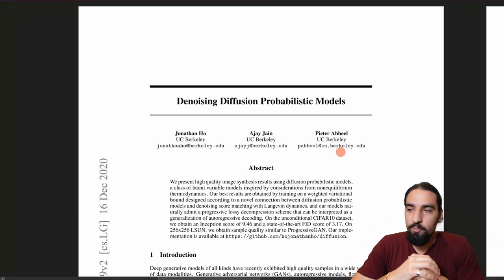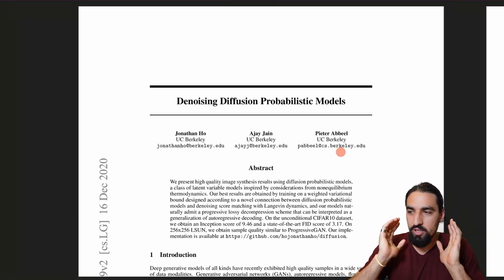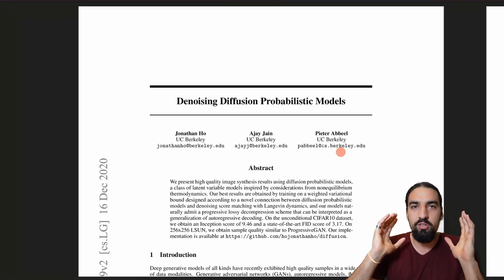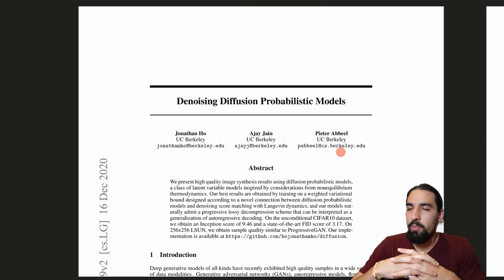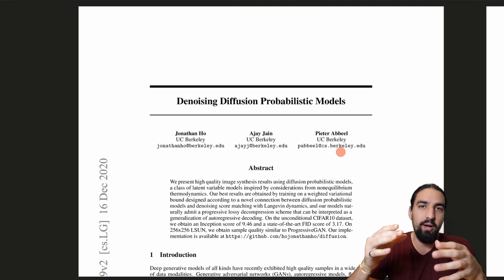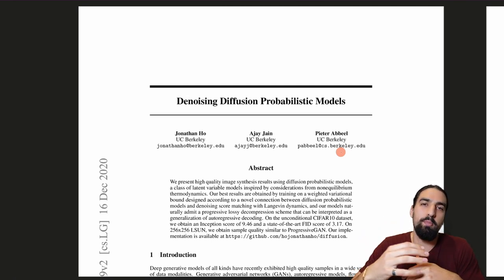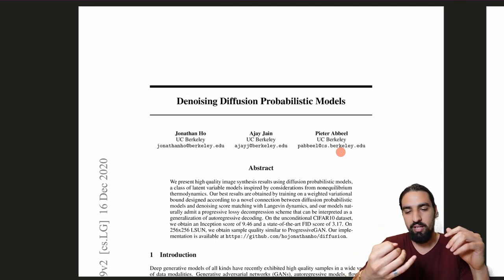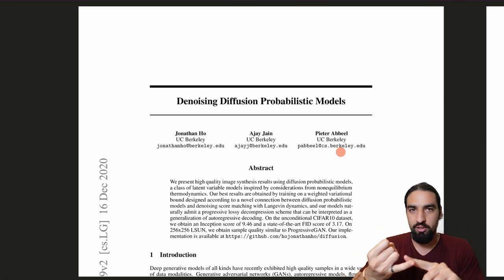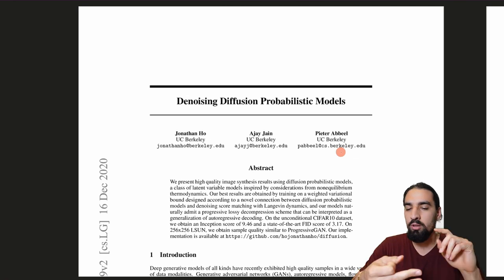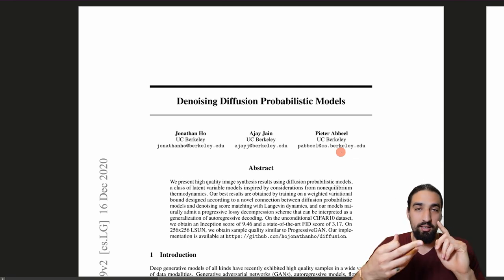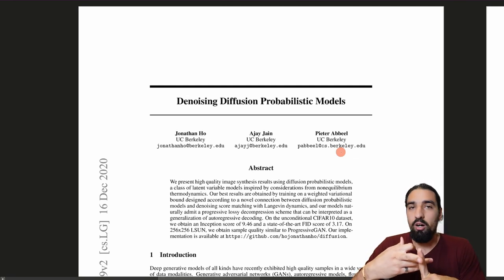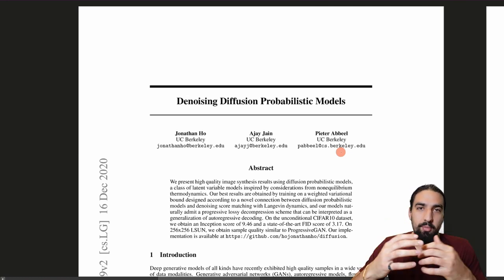What's up, guys? In this video, I'm focusing on covering diffusion models — basically the family of models that are powering some of the most famous AI models over the last couple of months, such as DALL-E 2, Imagen from Google, Glide from OpenAI, and many other models.